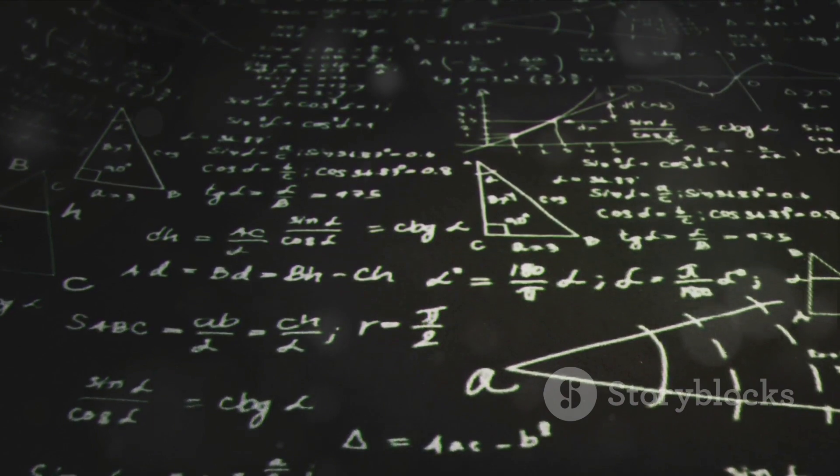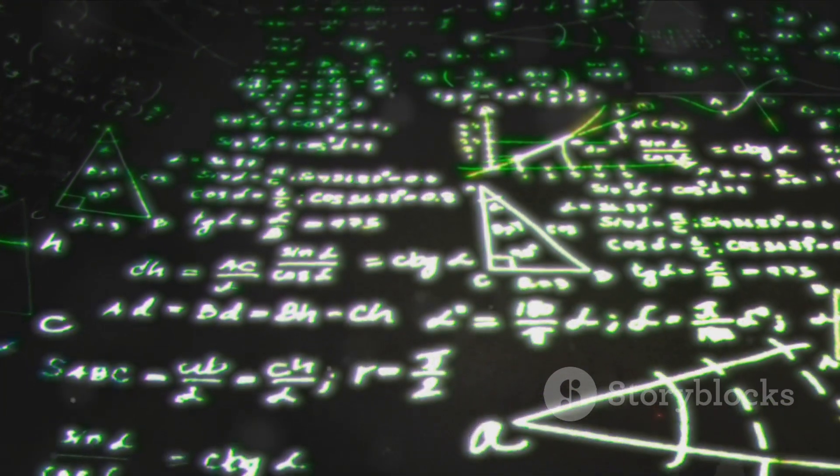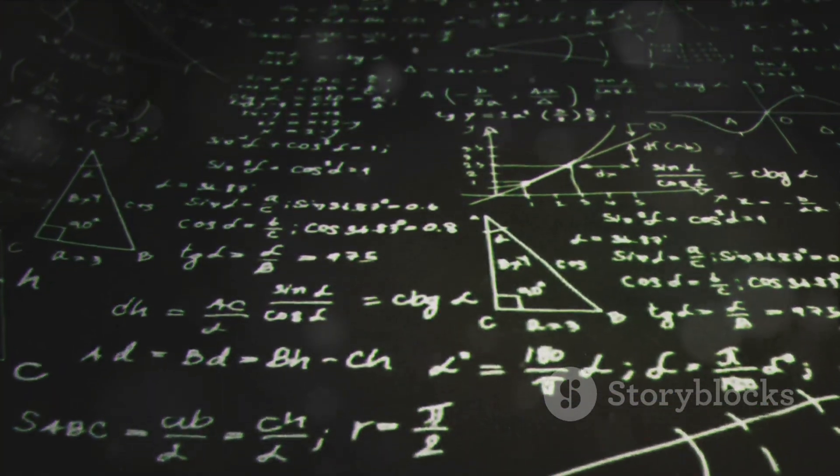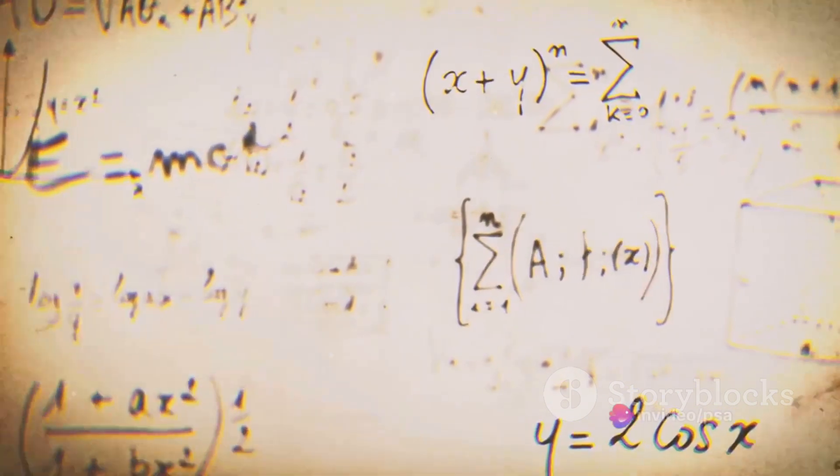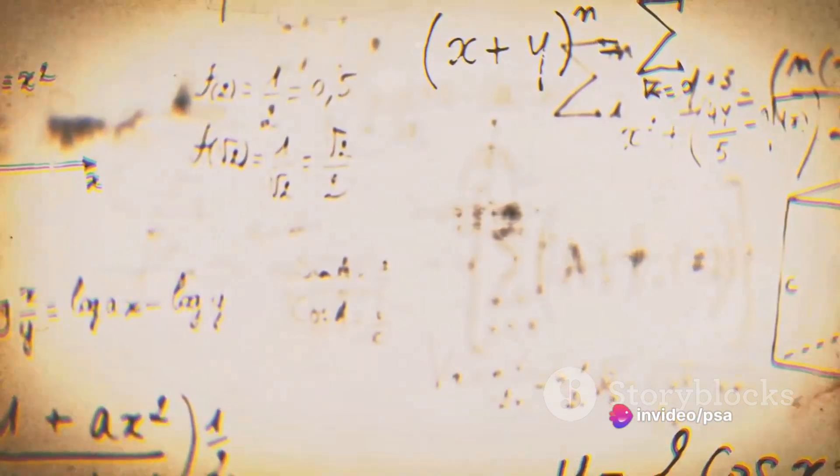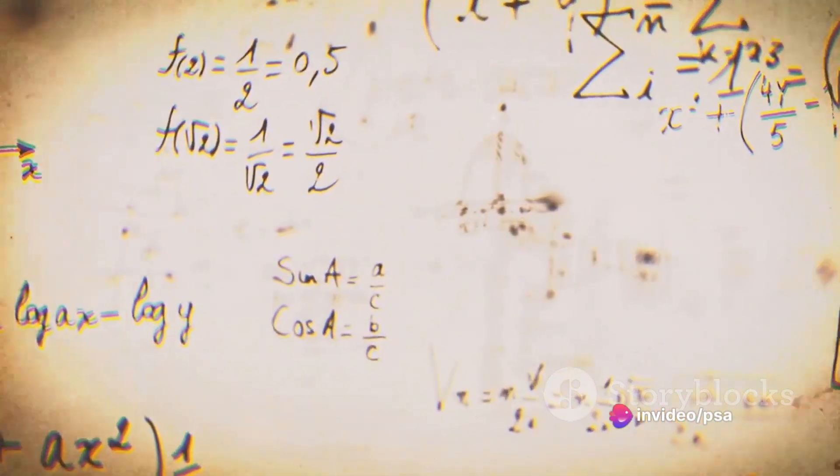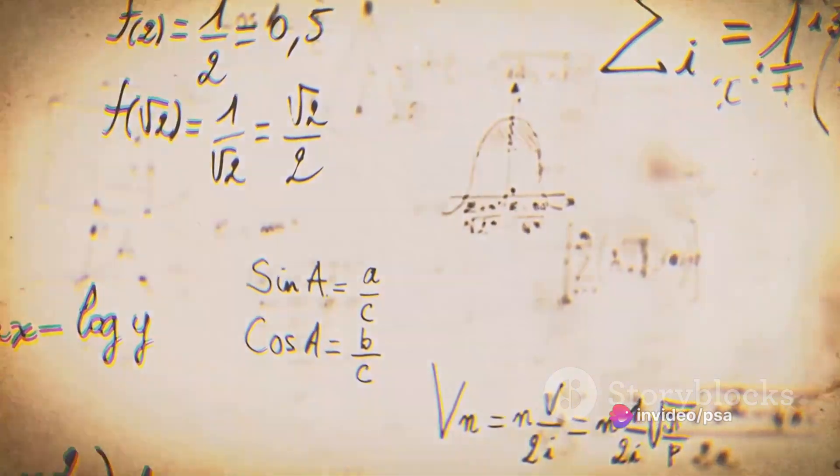Like a well-orchestrated symphony, a trigonometric cycle is a beautiful dance of mathematical relationships. Here, sine, cosine, and tangent take center stage, their values changing rhythmically as we progress around a circle or cycle.